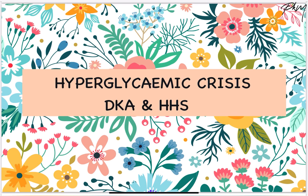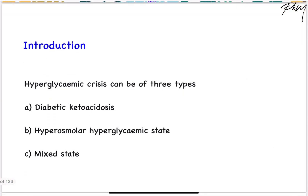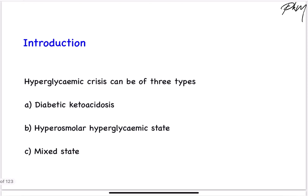Welcome back to another video. This video is about hyperglycemic crisis, which includes diabetic ketoacidosis and hyperosmolar hyperglycemic state. Hyperglycemic crisis is one of the common emergencies seen in a diabetic patient. It can be of three types: DKA or diabetic ketoacidosis, HHS or hyperosmolar hyperglycemic state, and mixed state. We will be discussing DKA and HHS in this video.